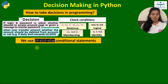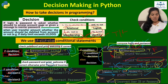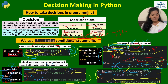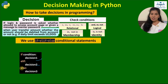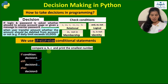We can also use multiple if statements, but in if-else we are taking only two decisions. If we have to take more than two decisions, we use multiple if-elif statements. For example, if we have to compare a, b, and c and print the smallest number, there are three possible decisions — a is smallest, b is smallest, or c is smallest — so we need multiple conditions.